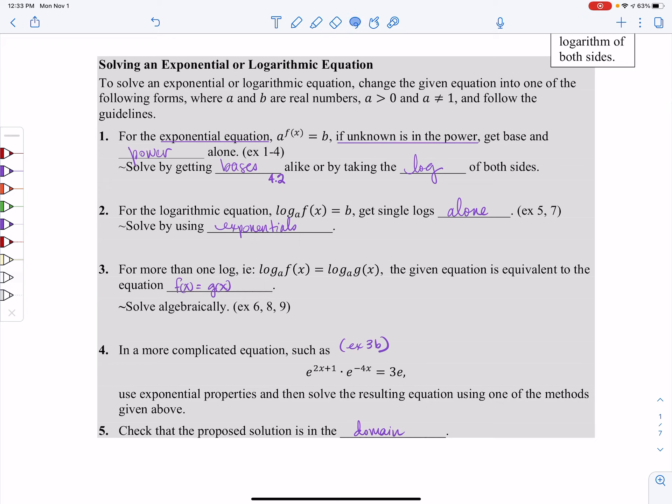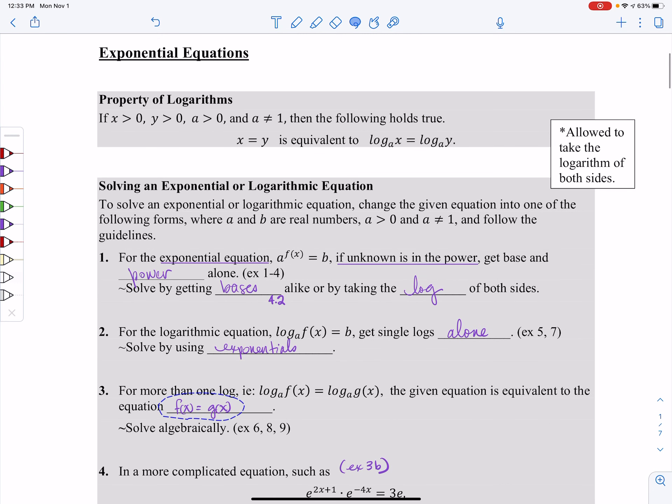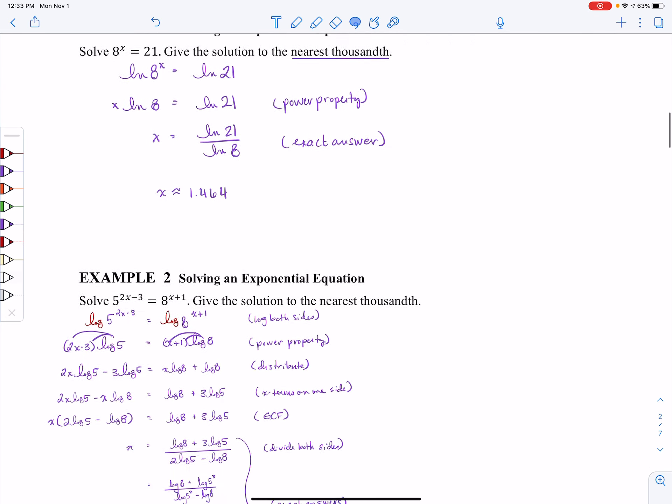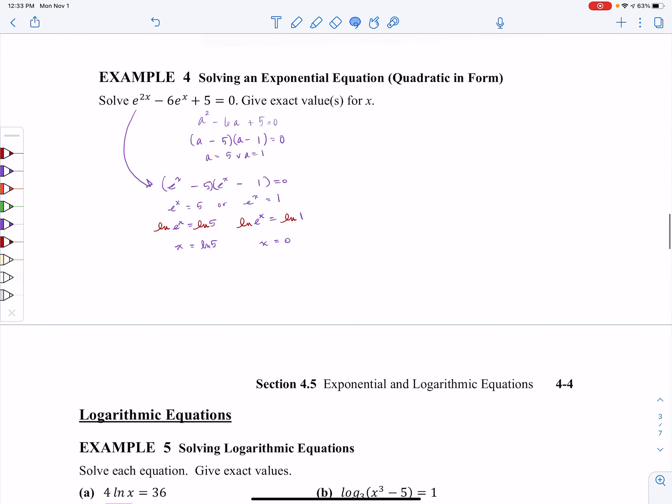So you'll notice this tip says for solving a log equation where I have more than one log. In this case, we've got a logarithm equals a logarithm. And the given equation is going to equal f of x equals g of x. This goes back to this property that we talked about in the first video. So we're going to work examples number 6, 8, and 9. Let's follow me down here to example 6.